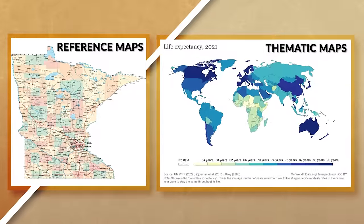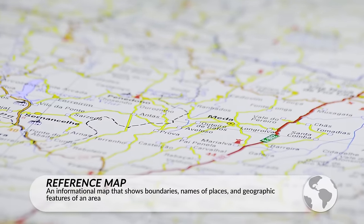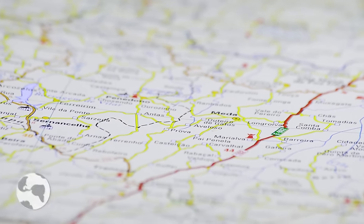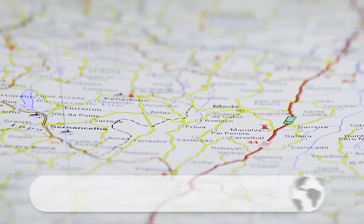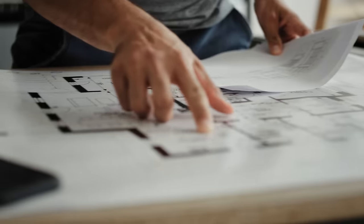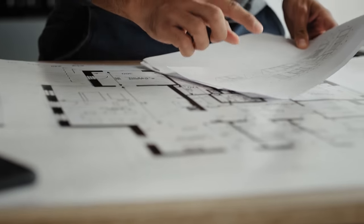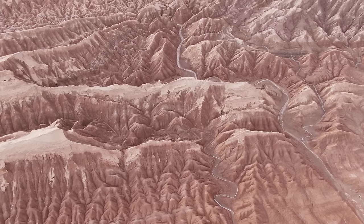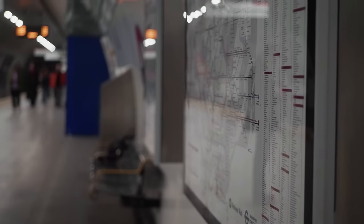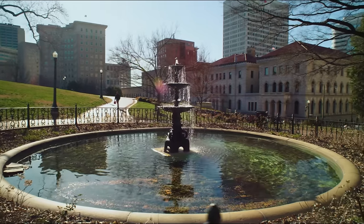Moving on from map projections to types of maps, there are two broad categories: reference maps and thematic maps. Reference maps are informational maps that show boundaries, the toponym, and geographic features of a place. Reference maps are often used for directions, to display property lines, political boundaries, elevation changes, public transportation routes, or to show key features of a place.